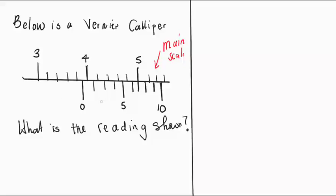And this one here that we're seeing down here, the other down scale, that's a Vernier scale. So what is the reading? The first thing that you need to do is find the main scale reading first. Let's get the main scale reading.